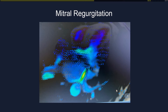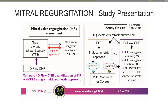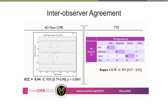Moving to mitral regurgitation: the protocol was similar, with two experienced TTE readers and dual MRI reading. The inter-observer agreement with 4D flow MRI was very good, with an intraclass correlation of 0.94. The TTE inter-observer agreement was also good, with a kappa of 0.75.